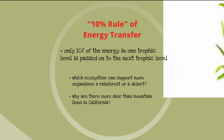Considering the 10% rule, think about these two questions. Which ecosystem could support more organisms — a rainforest or a desert? Another question: why are there more deer than mountain lions in California? These can easily be explained by this 10% rule of energy transfer.